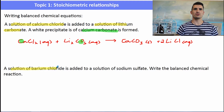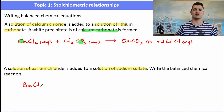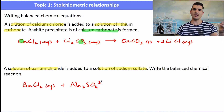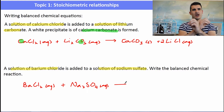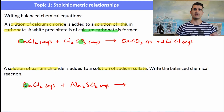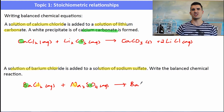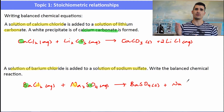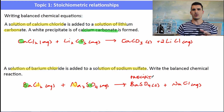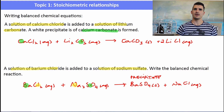A solution of barium chloride BaCl2 (aqueous) is added to sodium sulfate Na2SO4 (aqueous). The positive ion from one compound is attracted to the negative ion from the other — they swap over. Barium is attracted to sulfate and sodium is attracted to chloride, giving BaSO4 (a precipitate, so solid) and NaCl (sodium chloride), which needs balancing with a two in front. BaSO4 is a precipitate because it forms a solid that settles to the bottom of the test tube.